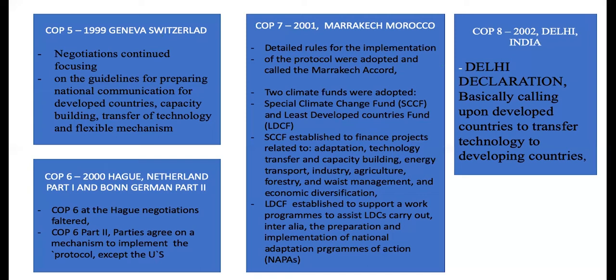The COP went on to Morocco — Marrakech in 2001. In Marrakech, the detailed rules for implementation of the protocols were adopted, and they called them the Marrakech Accord, the famous Marrakech Accord. At the same time, the conference adopted two climate funds: the Special Climate Change Fund and the Least Developed Country Fund.